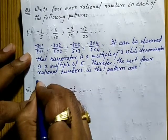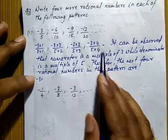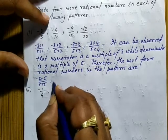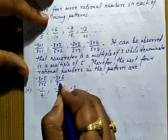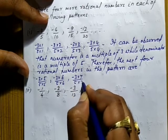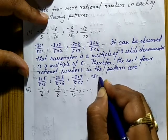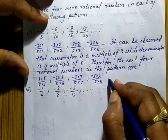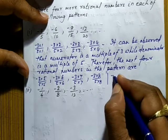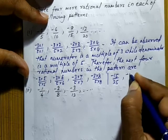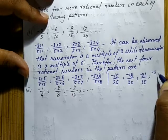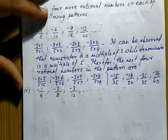Therefore the next four rational numbers in this pattern are: minus three into five upon five into five, minus three into six upon five into six, minus three into seven upon five into seven, and minus three into eight upon five into eight. That is minus fifteen upon twenty-five, minus eighteen upon thirty, minus twenty-one upon thirty-five, and minus twenty-four upon forty.